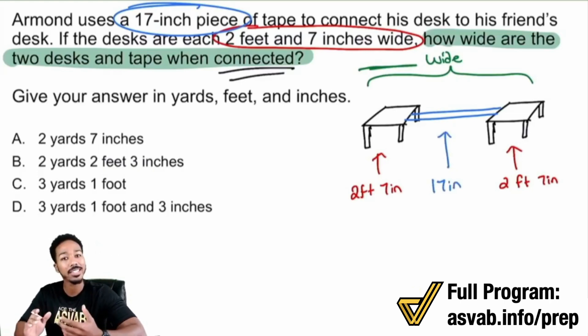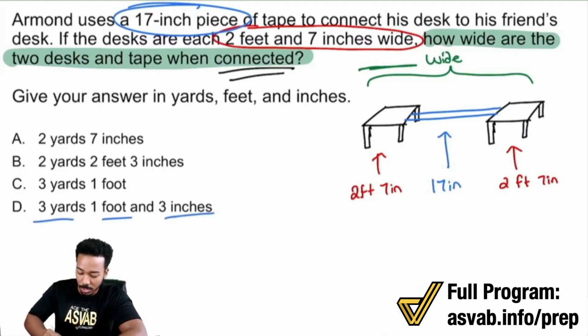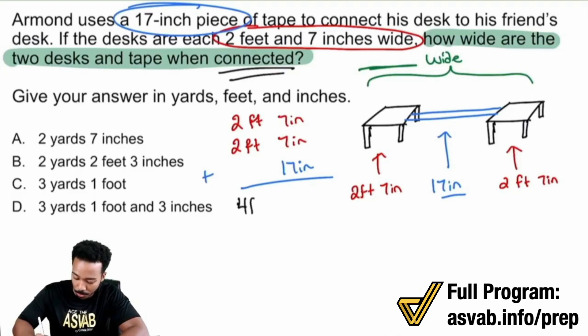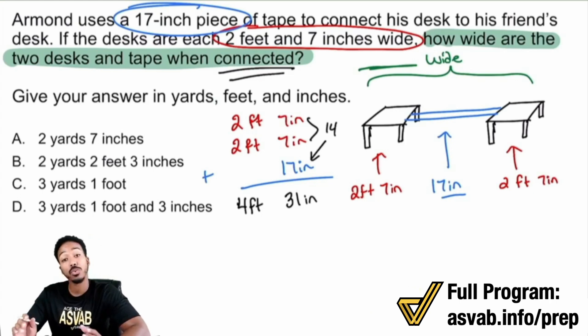So two feet seven inches, two feet seven inches. Now next we're going to be looking at that piece of tape, that's 17 inches. All we're doing now is adding everything together, but there's going to be some conversion happening here because we want our answer in yards, feet, and inches.